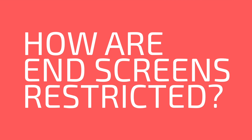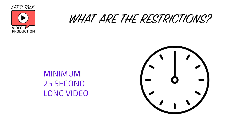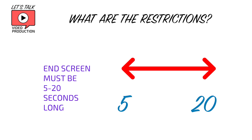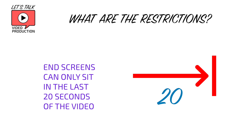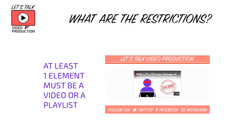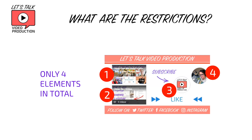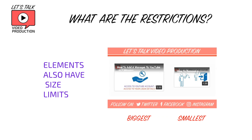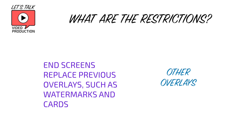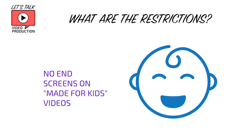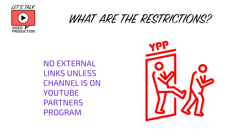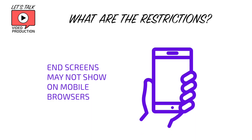So what are the restrictions of end screens? Your video must be at least 25 seconds long to have an end screen. Your end screen must be between 5 and 20 seconds long. You can only place end screens in the last 20 seconds of the video. At least one of your elements must be a video or a playlist. You can have up to four elements on your end screen but no more. You have a restricted area within which you can place elements and are limited to how big or small you can make those elements. Other overlays sitting across the video before the end screen — for example, cards — will disappear while the end screen is up. You cannot have end screens on videos identified as made for kids. If you want to add an external link you must be on the YouTube Partner Programme. The end screen should show up on apps and mobile devices but may not show up in the browser on those devices.